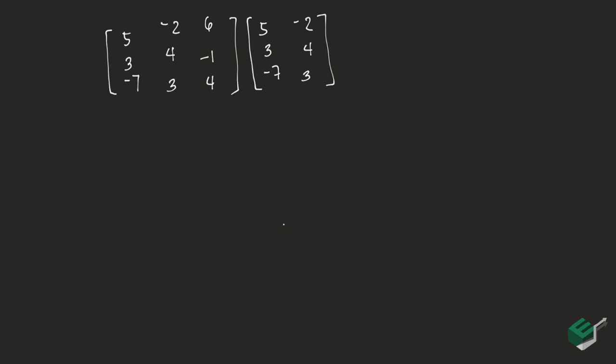Doing the basketweave method, we can draw diagonal lines to guide us along the way. So it goes something like this: 5 times 4 times 4 plus negative 2 times negative 1 times negative 7 plus 6 times 3 times 3.